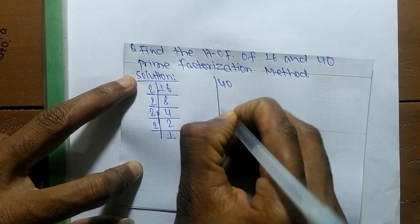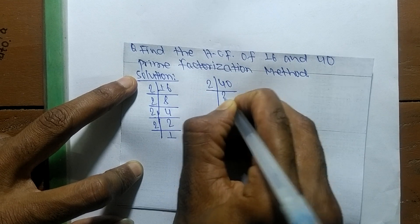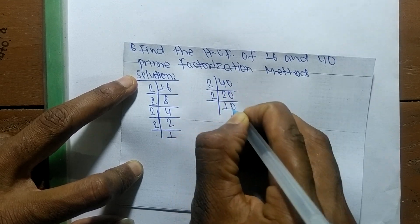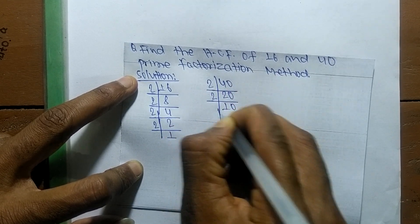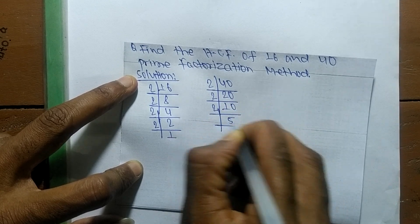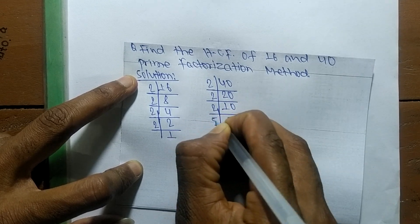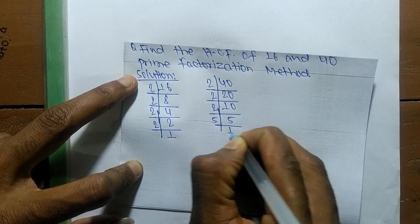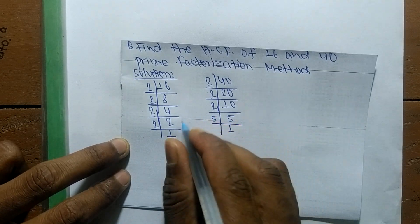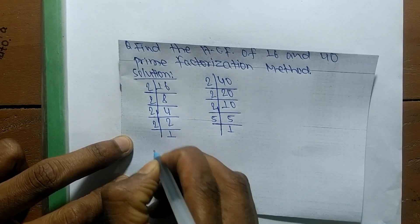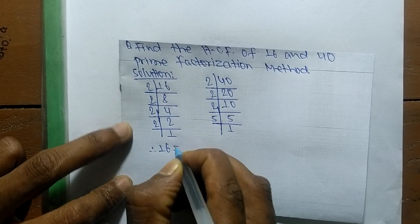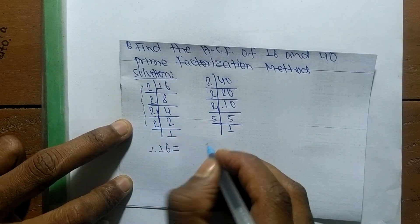Likewise, the prime factors of 40 are: 2 times 20 means 40, 2 times 10 means 20, 2 times 5 means 10, and 5 times 1 means 5. So from these prime factors we can write: